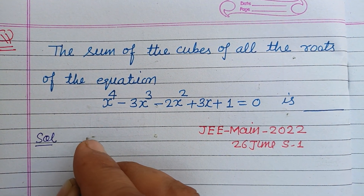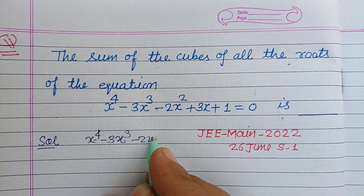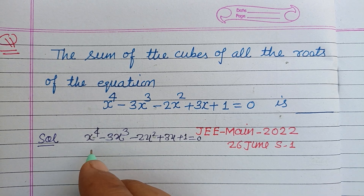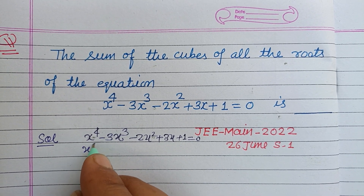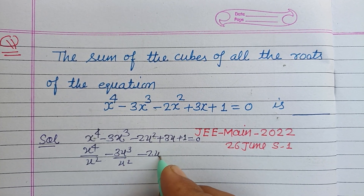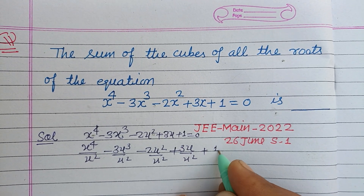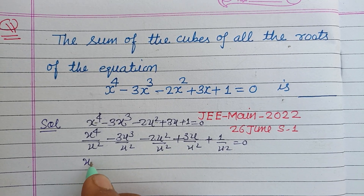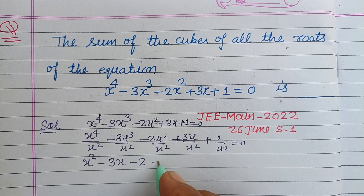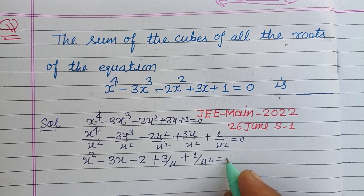The equation is x to the power 4 minus 3x cubed minus 2x squared plus 3x plus 1 equal to 0. We divide both sides by x squared, giving: x squared minus 3x minus 2 plus 3 upon x plus 1 upon x squared equal to 0.